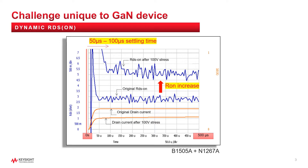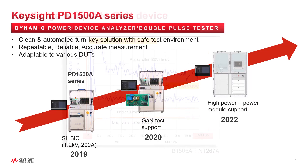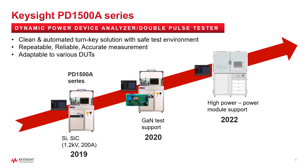In the following slides, I'm going to show you how we've overcome these challenges. Keysight released the PD1500A Dynamic Power Device Analyzer Double-Pulse Tester in 2019, which provides a turnkey solution with repeatable, reliable, and accurate measurement based on a unique compensation technology. We created the GaN device test solution in 2020, and we are also planning to release dynamic testers for power modules in the future.